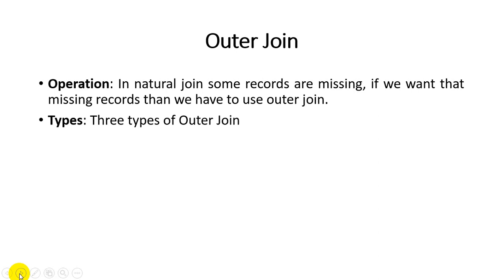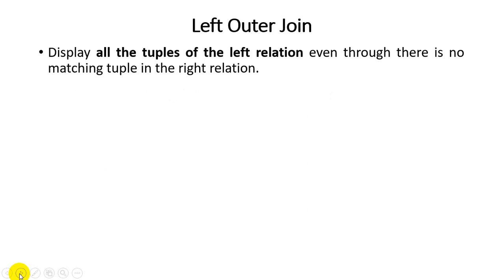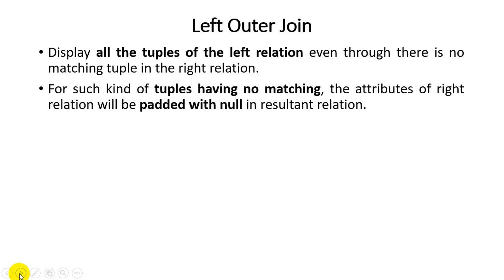We will discuss three types of outer join: left outer join, right outer join, and full outer join. Left outer join — the name itself suggests: display all tuples of the left relation even though there is no matching tuple in the right relation. As per the definition, we retrieve all records of the left relation; those that match from left to right appear in the final result.